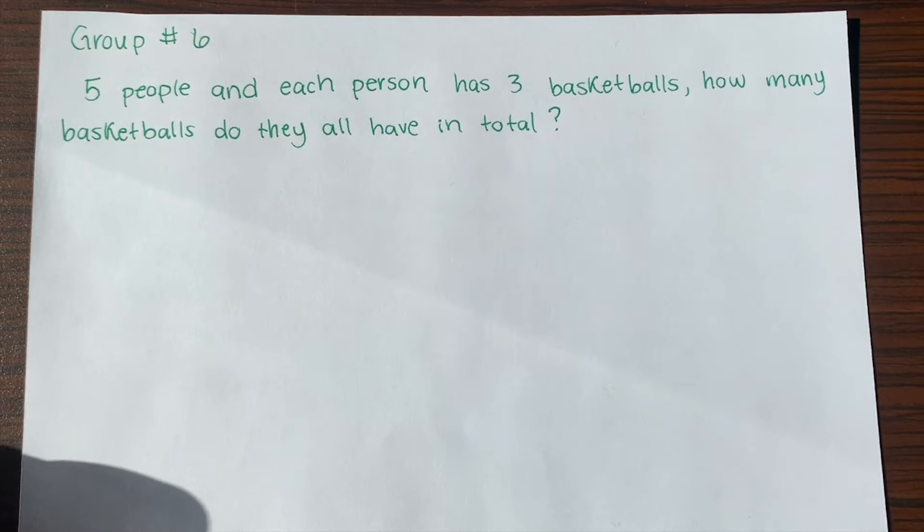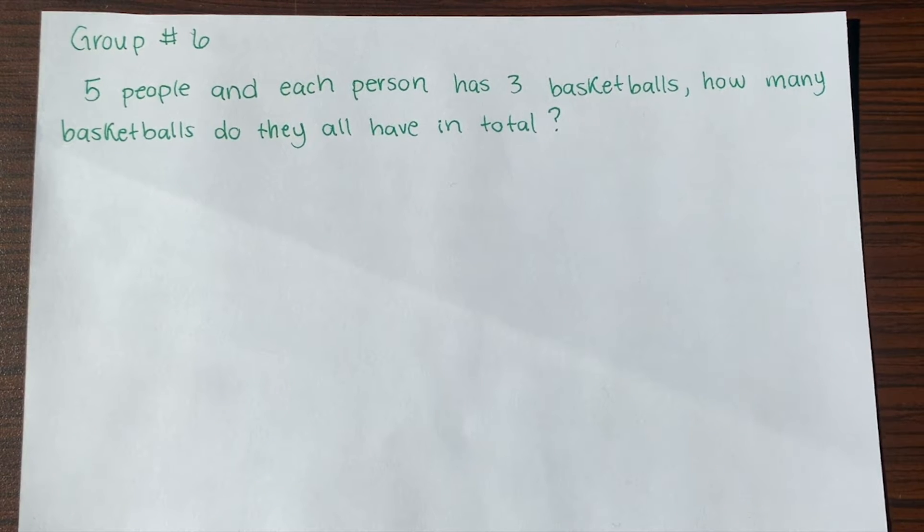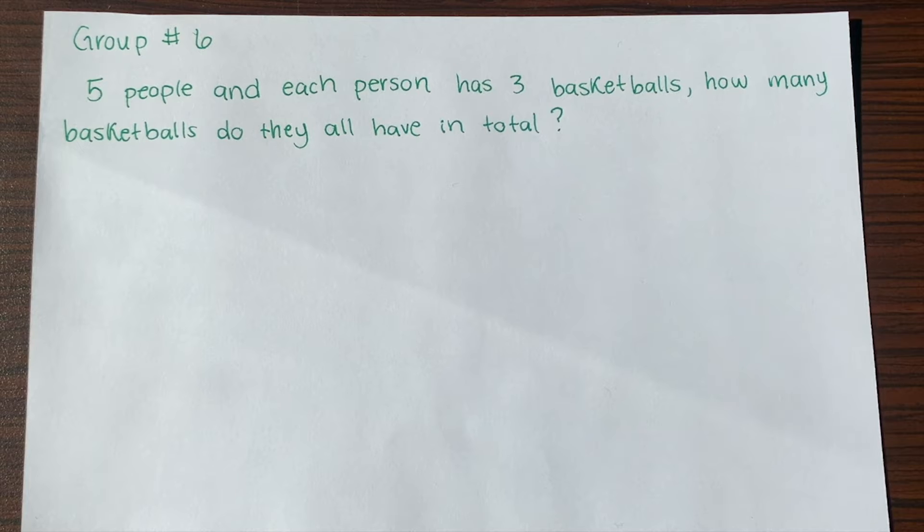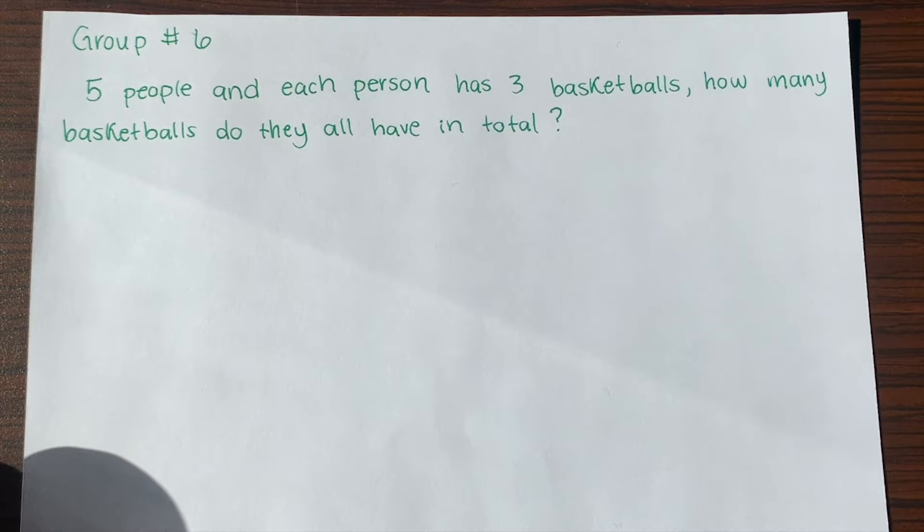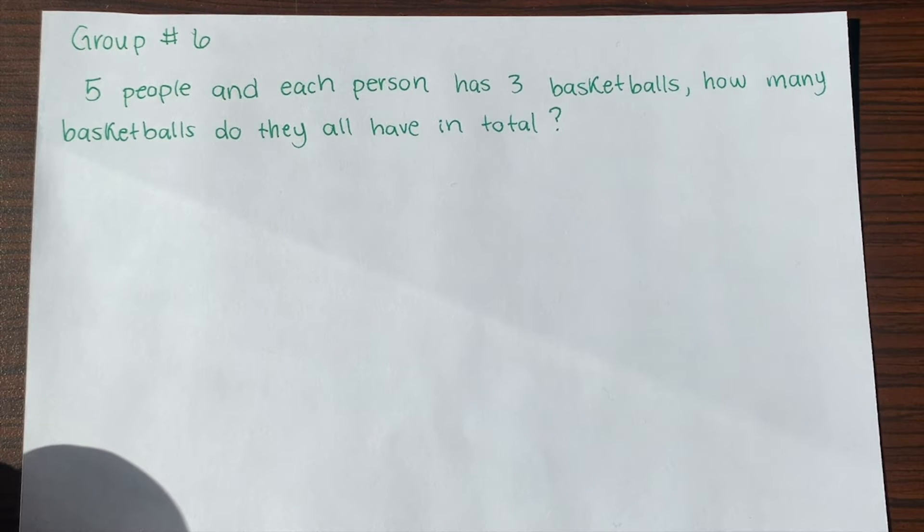Starting with our first problem, group 6 says five people and each person has three basketballs. How many basketballs do they all have in total? When it's asking how many they have in total, it's basically asking how many basketballs do they all have together.